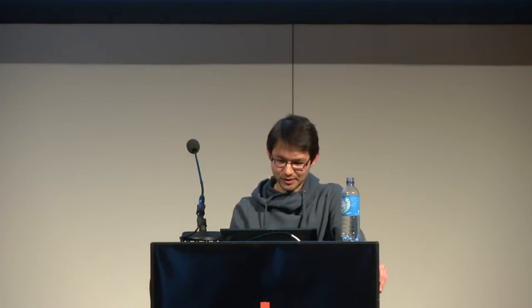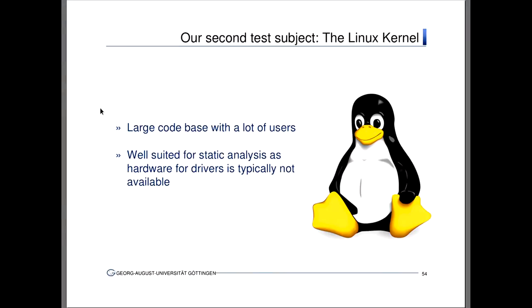The reason the exploit didn't work straight away is I did no work to ensure the heap is in any controllable state. These were a couple of luck shots that eventually hit the right address. But it shows you can execute arbitrary code, so that has to be enough to patch it. Our second test subject was the Linux kernel — also well suited for static analysis, because there are a lot of drivers in there, and to actually fuzz those drivers you would need the hardware. So you find a lot of things statically. It's also a large code base with a lot of users, so it's interesting.